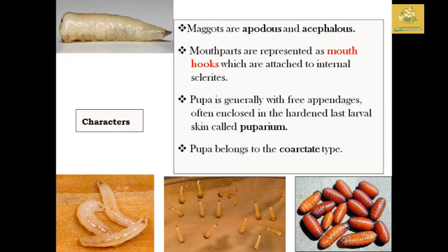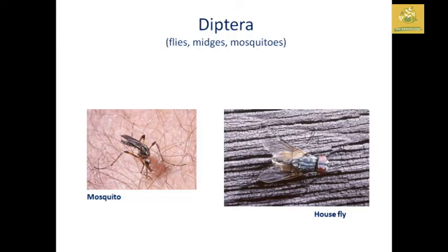Continuing the characters, the characteristics of maggots: they are said to be apodous as well as acephalous. The mouthparts are represented by mouth hooks, which are attached to internal sclerites. The pupa generally has free appendages and is often enclosed in a hardened last larval skin called the puparium. The pupa belongs to the coarctate type.